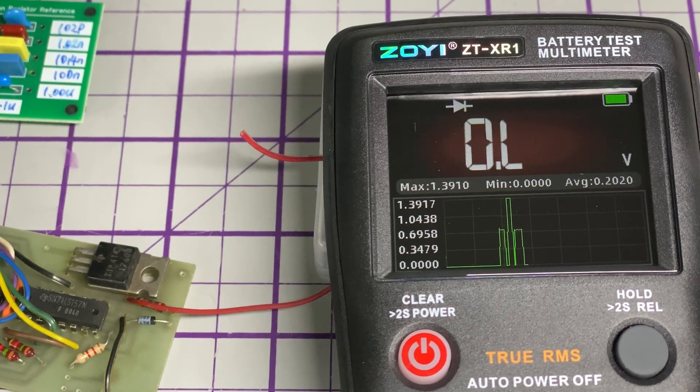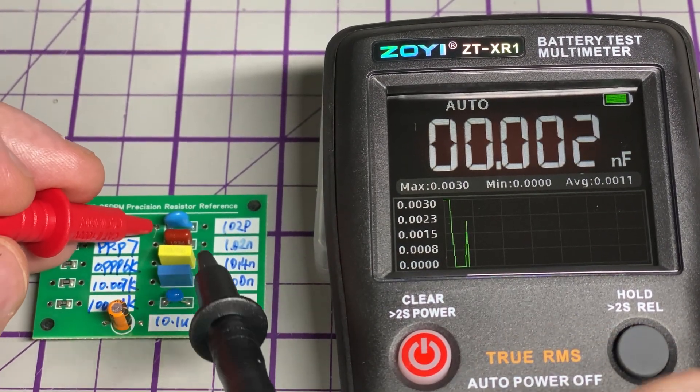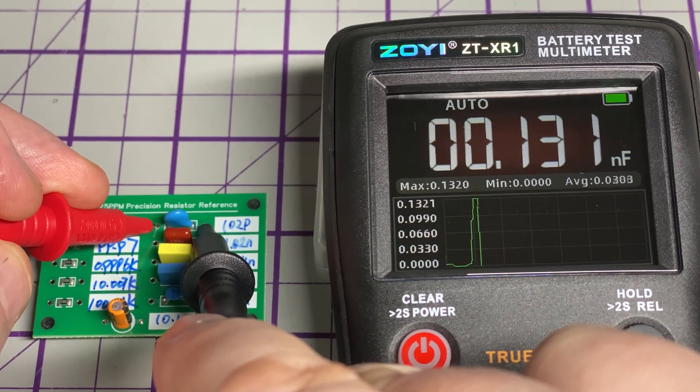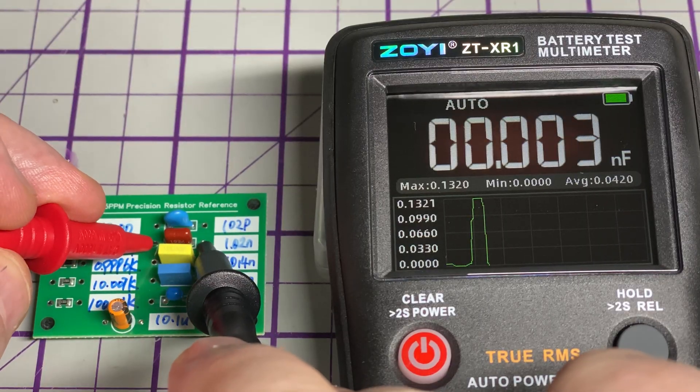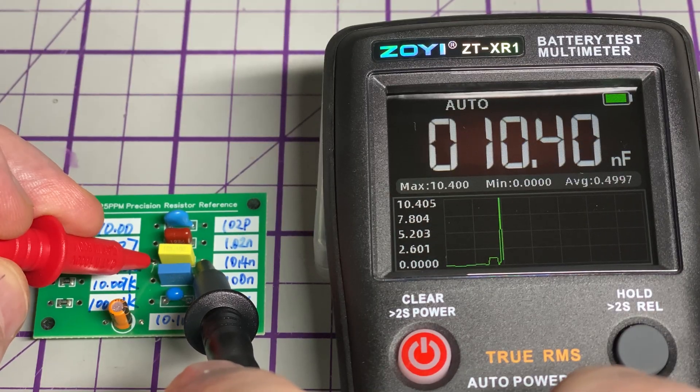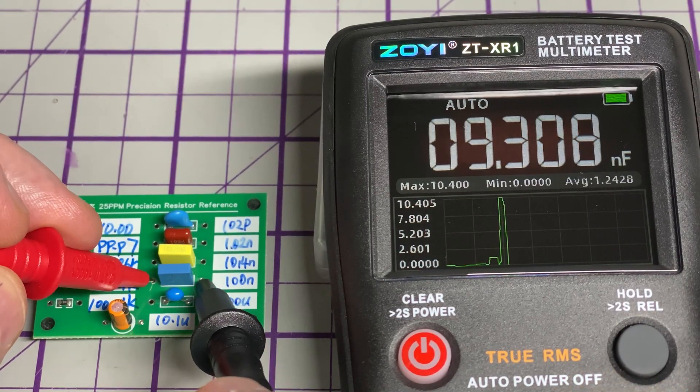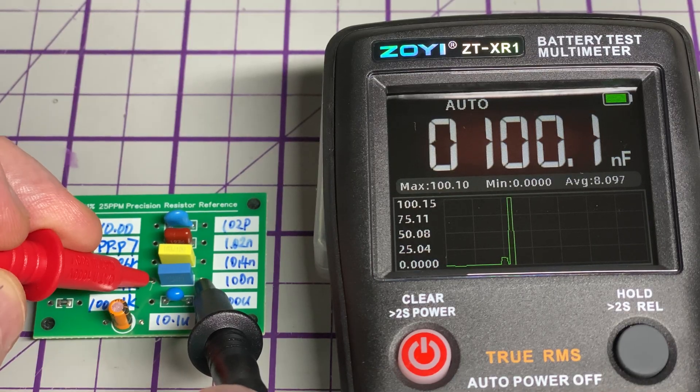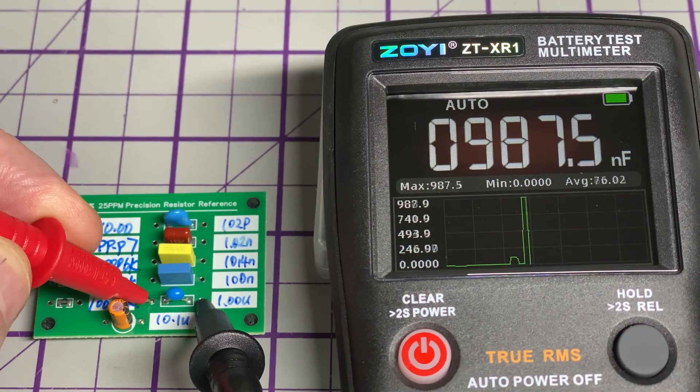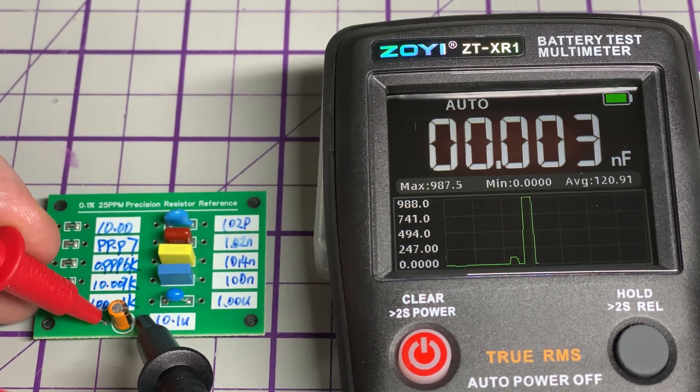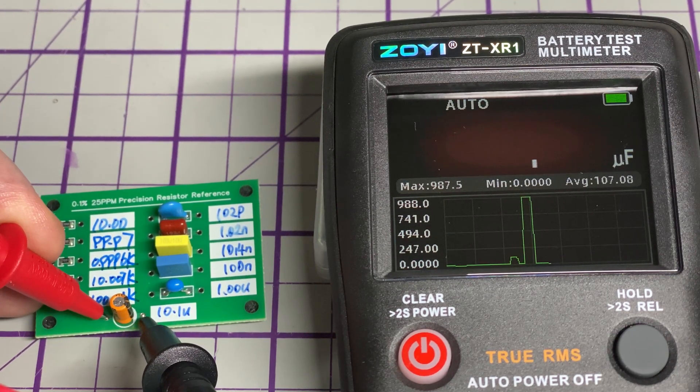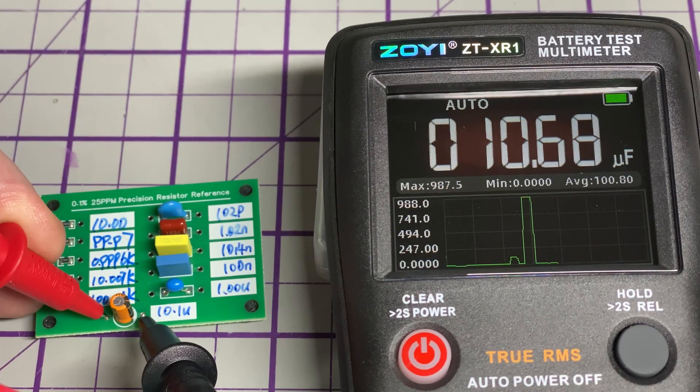Let's have a look at capacitance. This should be picofarads, and trying to read picofarads is very subjected to the leads. We'll move up to nanofarads. Yep, 1 nanofarad. This should be 10 nanofarad. And then we've got 100 nanofarad, that's fine. And then we've got a 1 microfarad, it's close. And a 10 microfarad.